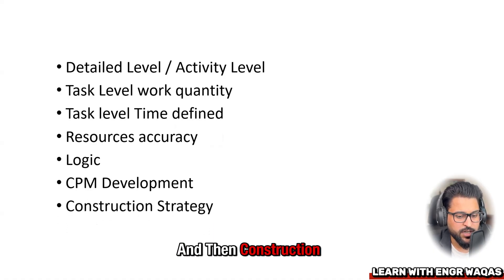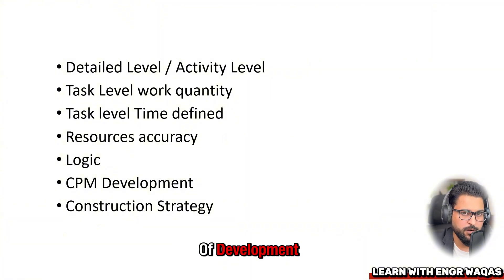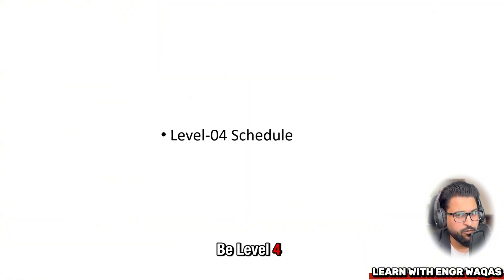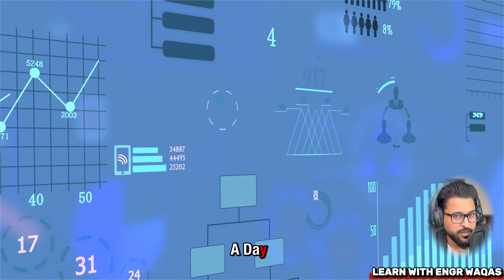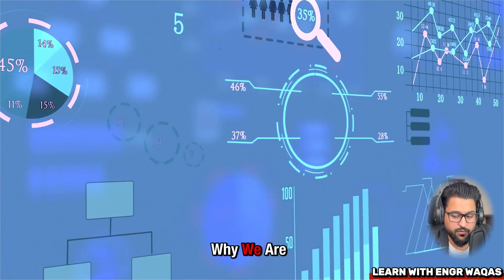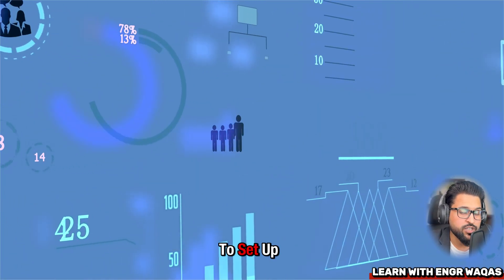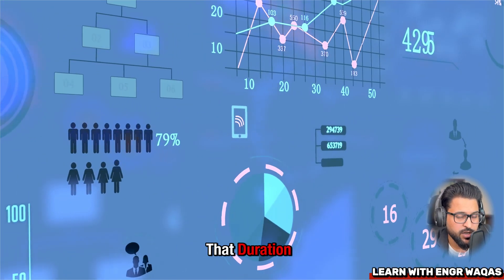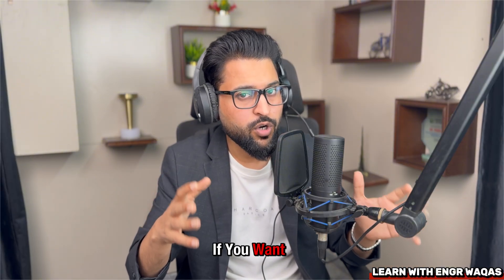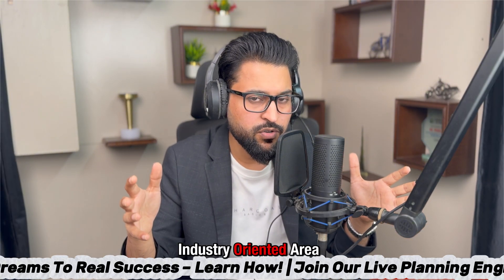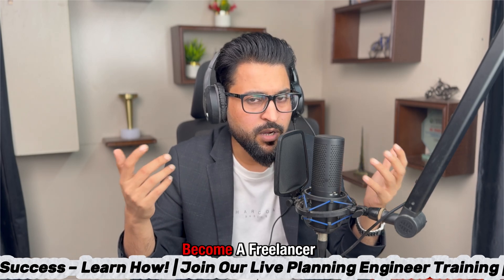Level 3 schedule is detailed at activity level: task-level work quantities are defined, time is defined, resource accuracy is established, logic is set, and CPM — Critical Path Method — is developed. Construction strategy is built on the basis of the critical path. Level 4 schedule involves resource assignment — for example, if you have 10 helpers you cannot plan work for 15 helpers per day, so resource limits justify duration decisions.